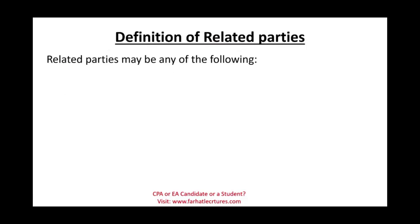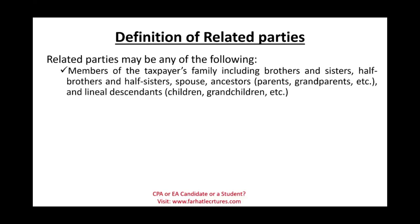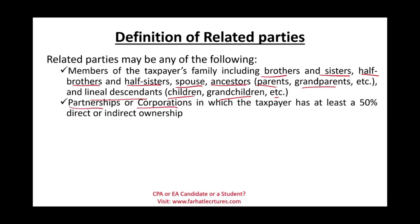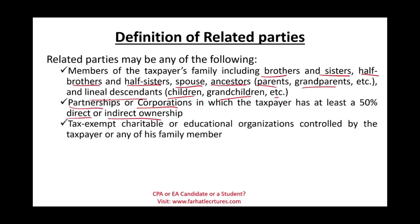For tax purposes, related parties can be any of the following: members of your family including brothers, sisters, half brothers, half sisters, spouse, ancestors — people above you such as parents and grandparents — and lineal descendants, people below you such as children and grandchildren. Also, if you own 50% or more in a partnership or a corporation, whether that ownership is direct or indirect, this becomes a related party transaction. Additionally, if you or any family member control a tax-exempt charitable or educational organization, those are related parties and could create a related party loss.